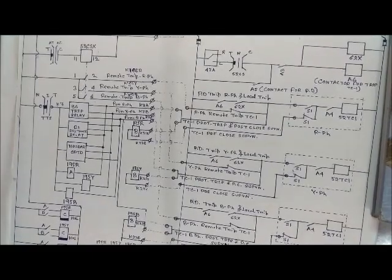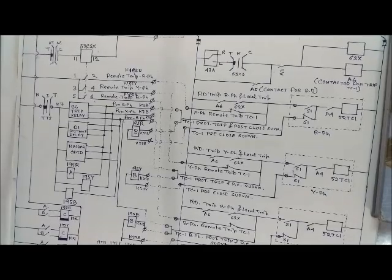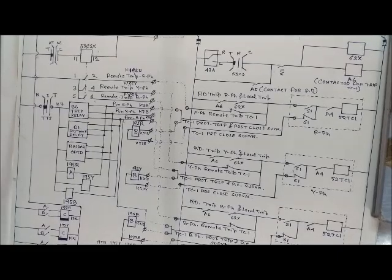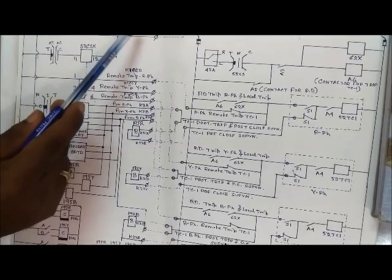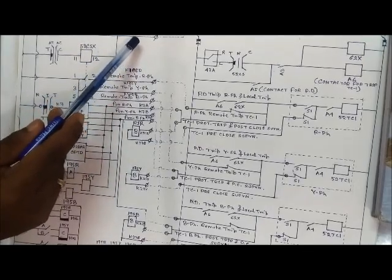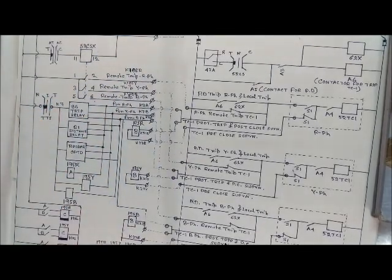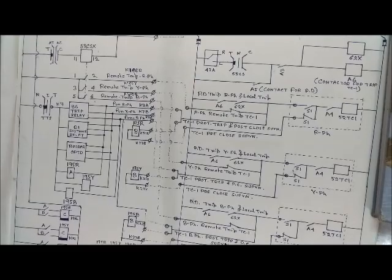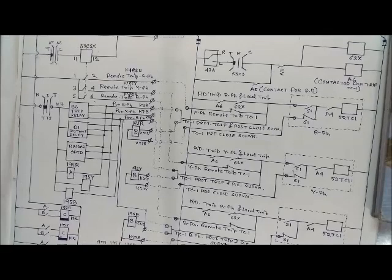This concludes the operation of the circuit breaker through trip circuit one. Similarly to trip circuit one, there is trip circuit two, which is not shown in this diagram. It is similar to trip circuit one — only the ferrule numbers change: for K101 it will be K201, for K102 it will be K202, and so on. If you like my videos, please visit my channel, subscribe, and press the bell button for future notifications. Thank you.